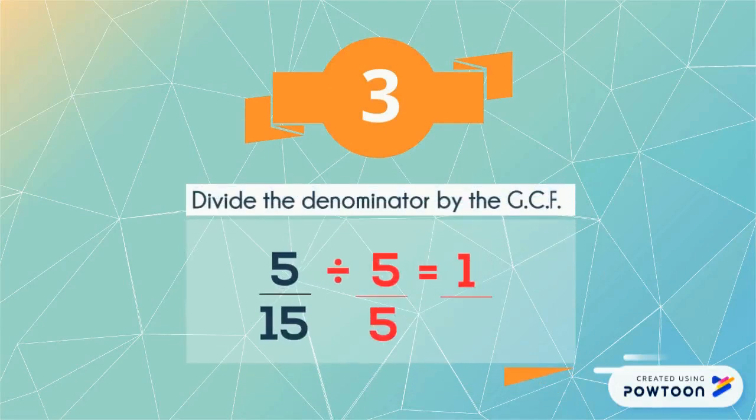Step 3: Divide the denominator by the greatest common factor. When we divide 15 by 5, we get the number 3. So 3 is our new denominator. And our answer is 1 third.